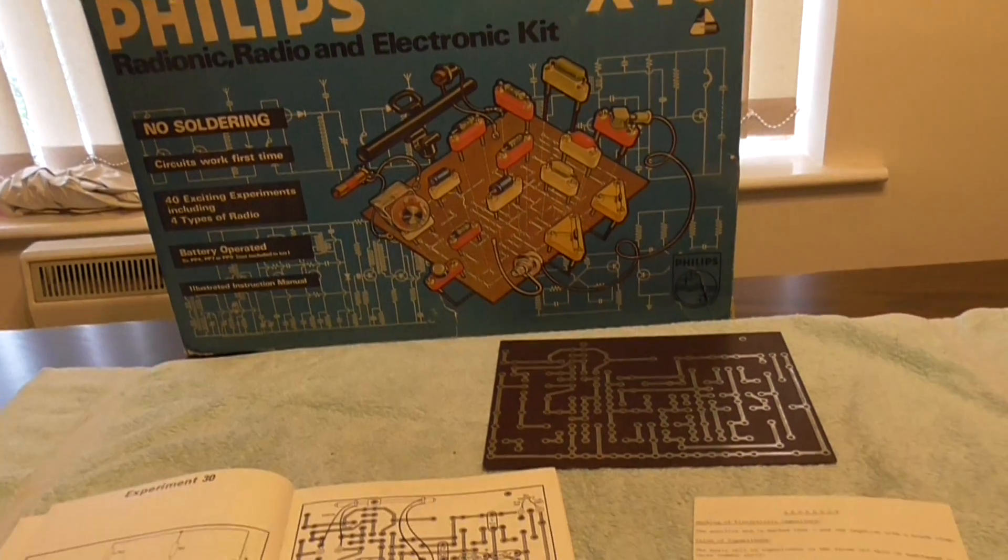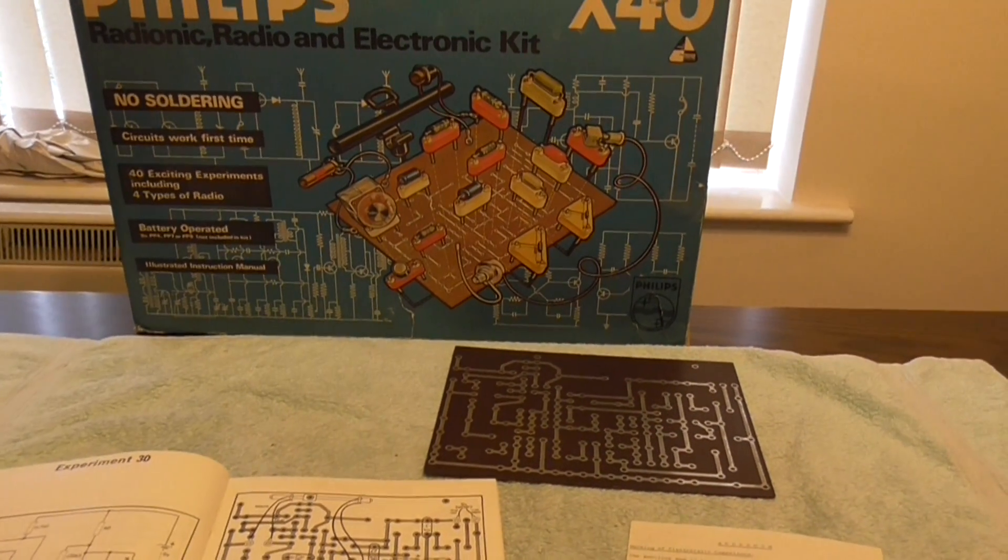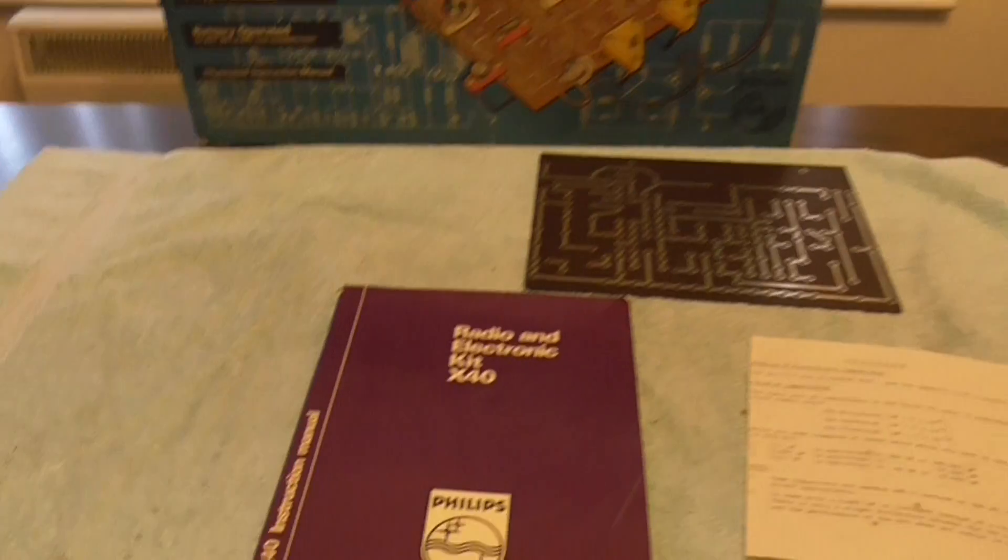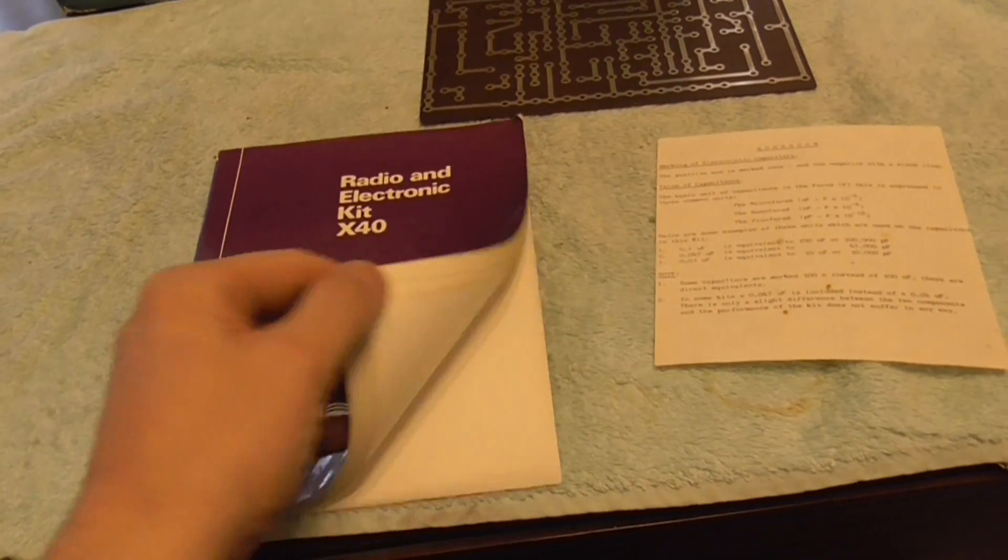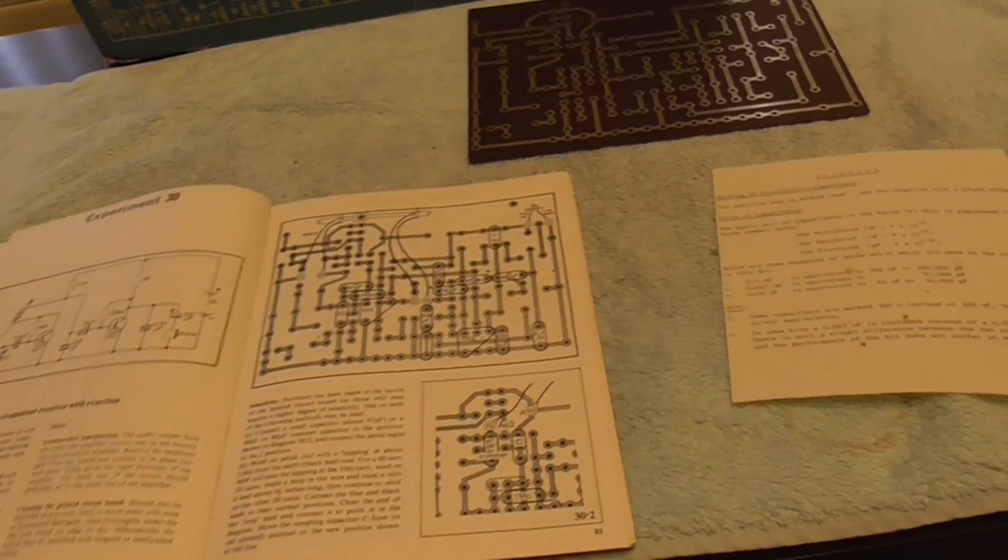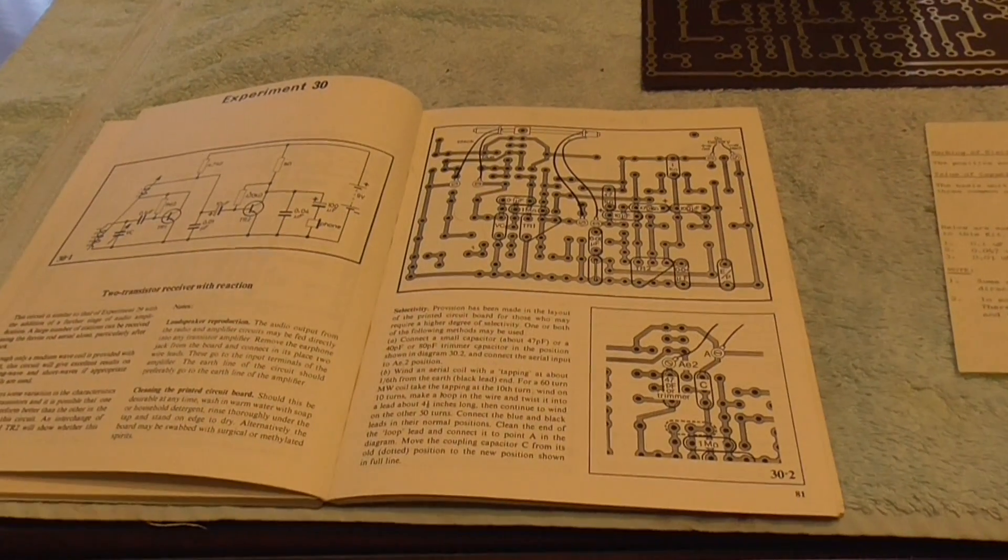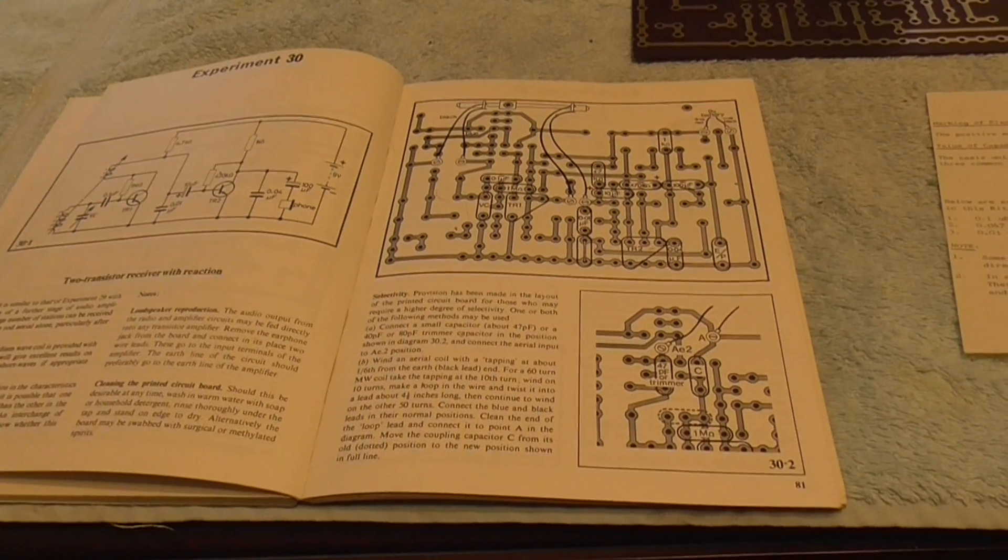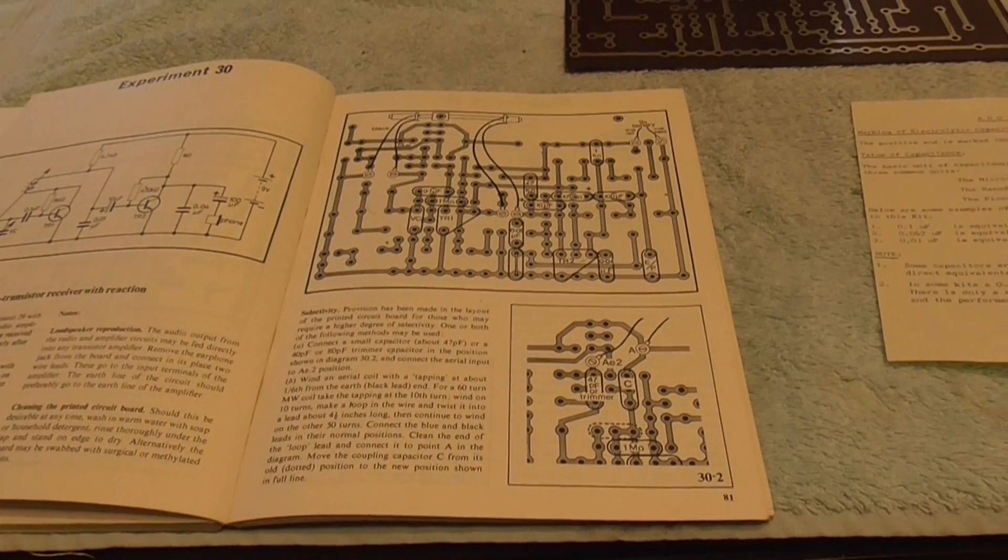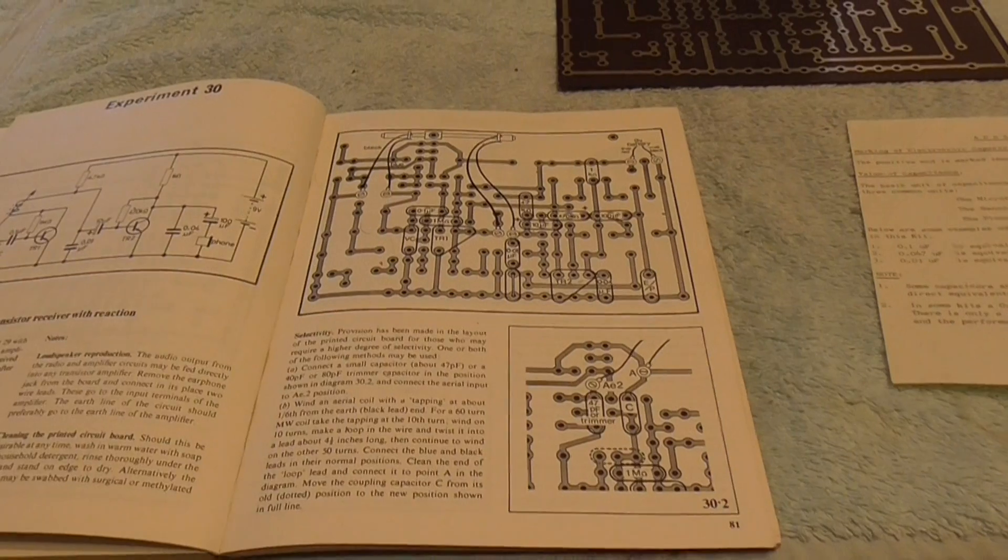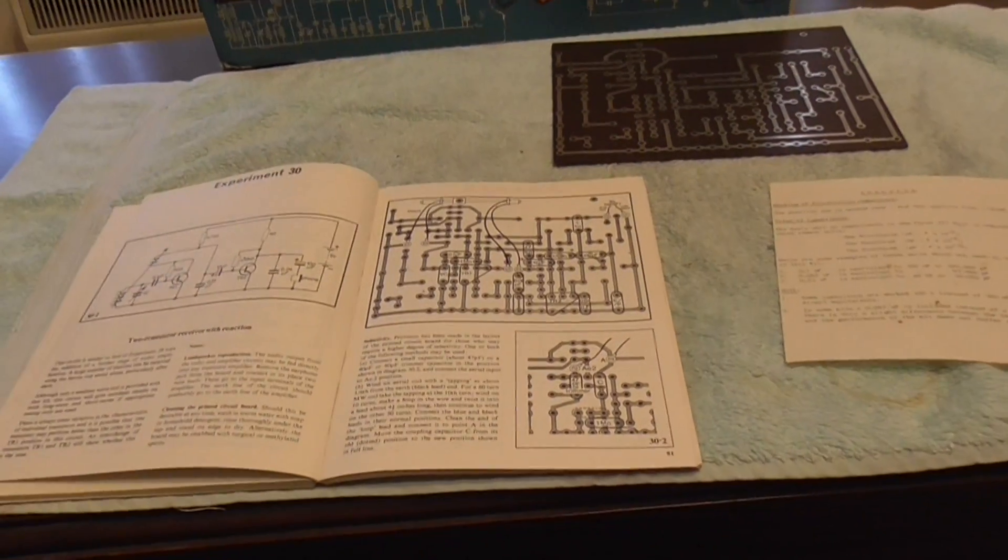You get a circuit board, components and this manual. That's the cover there. And I thought we would have a go at doing Experiment 30, which is to make a radio. We'll just make this lovely radio and hopefully we might even hear some music through it. We'll have to wait and see.